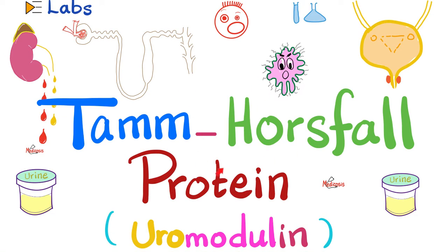Hey guys, it's Medicosis Perfectionatus, where medicine makes perfect sense. Let's continue our playlist called Labs. In previous videos, we talked about the beta-2 microglobulin, Benz-Jones proteins in the urine significant in cases of multiple myeloma, urine electrophoresis, urine uric acid, urine potassium, urine chloride, urinalysis — you name it. Today, let's dig deeper. Let's talk about the TAM Horsfall protein, also known as uromodulin.